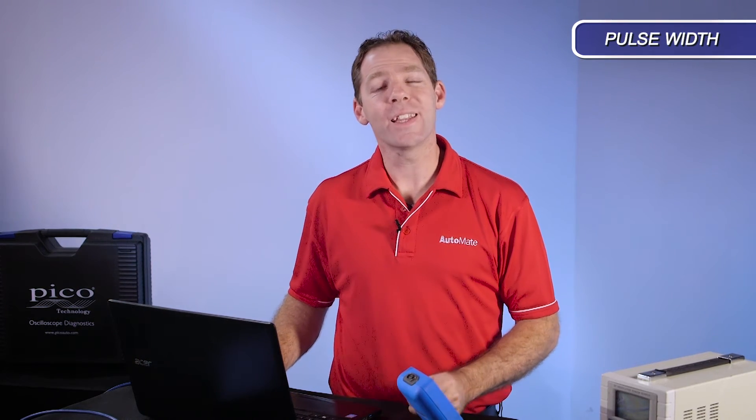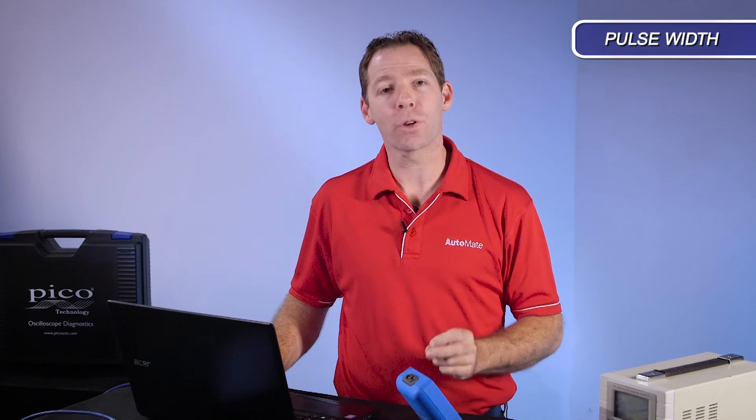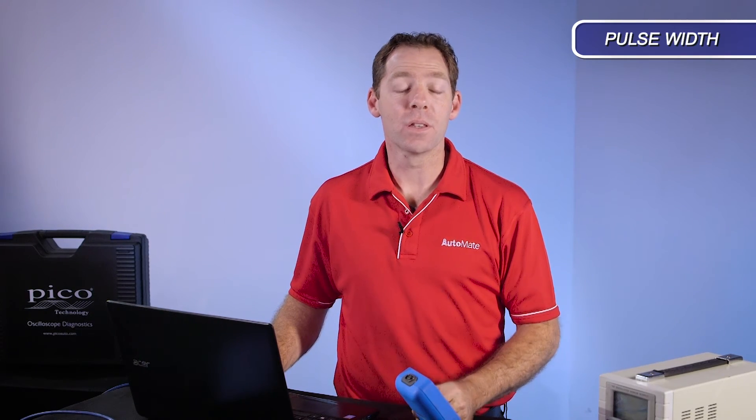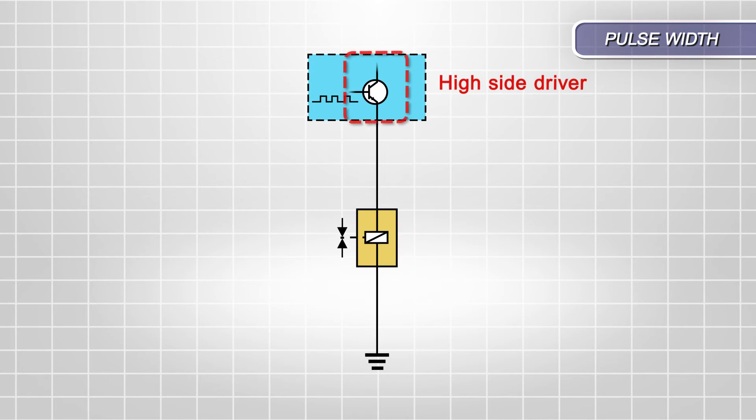Pulse width refers to the exact time the control is pulled high or low. This is measured in milliseconds. A circuit that uses a high side driver requires us to measure the pulse width when the voltage is pulled high.